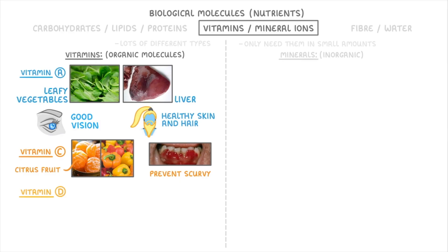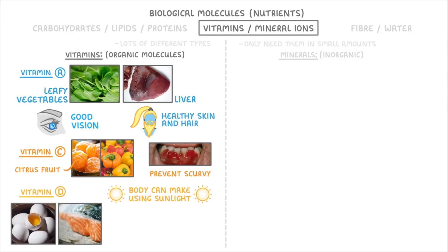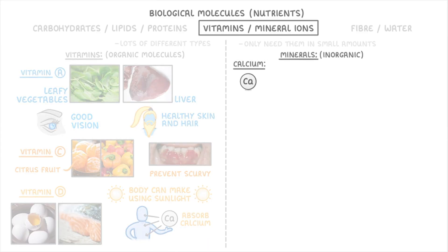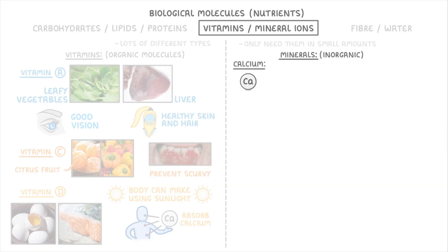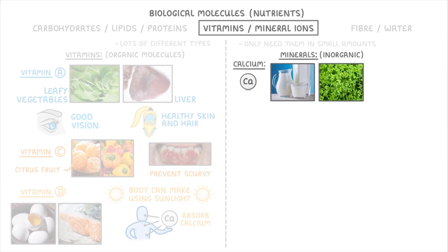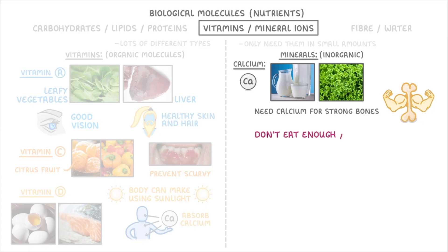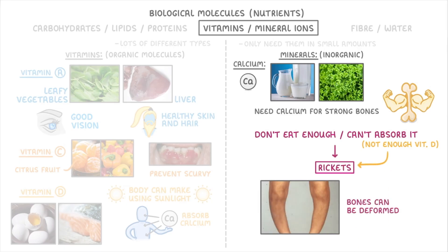There's also vitamin D, which is a weird one in that your body can actually make it itself using sunlight, but you can also get it in foods like eggs and oily fish, and its main purpose is to help you absorb calcium. Calcium itself is actually an example of a mineral ion, and is found in dairy products like milk as well as leafy vegetables. You need calcium for strong bones, and if you don't eat enough calcium, or you can't absorb it because you don't have enough vitamin D, then it could lead to a condition like rickets, where your bones can be deformed.